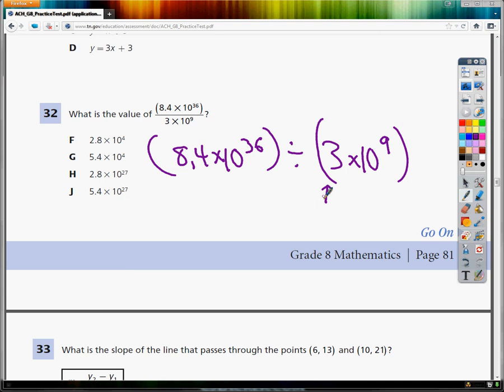You hit the alpha button, which is the green button, and you hit the Y equals, and your fraction menu pops up. Pick number one, and then you can type in 8.4 times 10 to the 36, and then click down to go to the bottom of the fraction. 3 times 10 to the 9th, and hit enter.